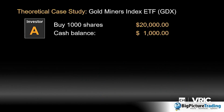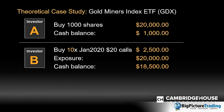So what does Investor A do? I just buy the shares. With $21,000 in cash, I buy 1,000 shares of GDX — $20,000 of stock — and I have $1,000 sitting in cash.